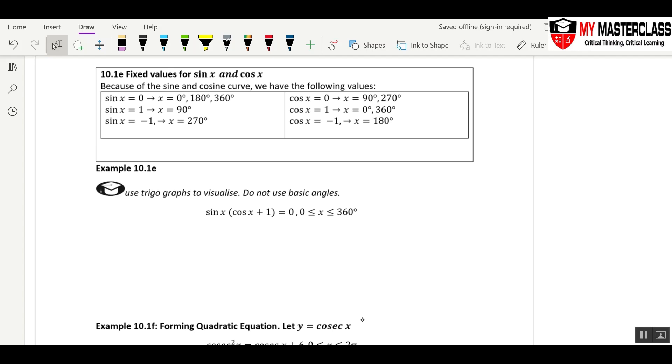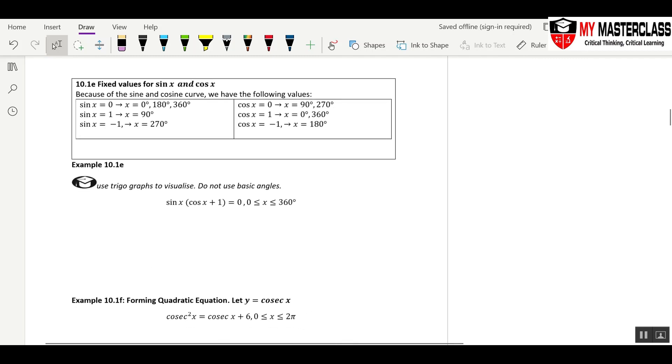When you see sine and cosine equals to 0, 1, negative 1, we cannot use basic angle. You have to use the graph to justify it. If you are not very confident of the graph, please go and review the graph videos.